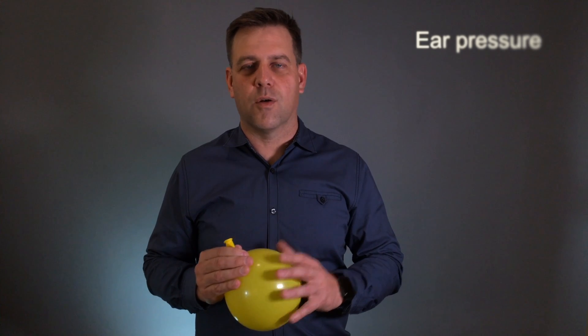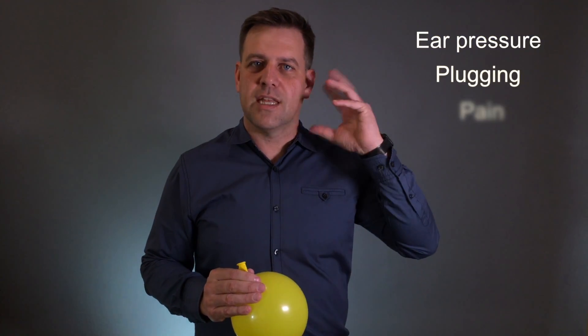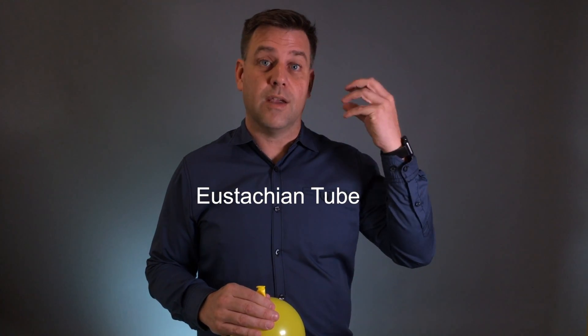We're talking about ear pressure or plugging of the ear sensations that affect the ear. One thing that can be a problem is the Eustachian tube. The Eustachian tube goes from your inner ear where you hear from, your eardrum, all the way to the inside of your throat. The Eustachian tube is an inch and a half long and for the most part remains collapsed.